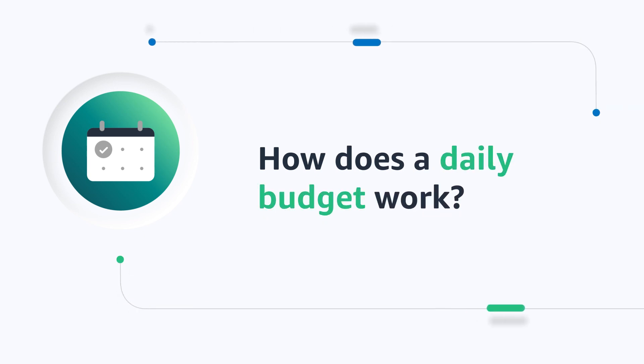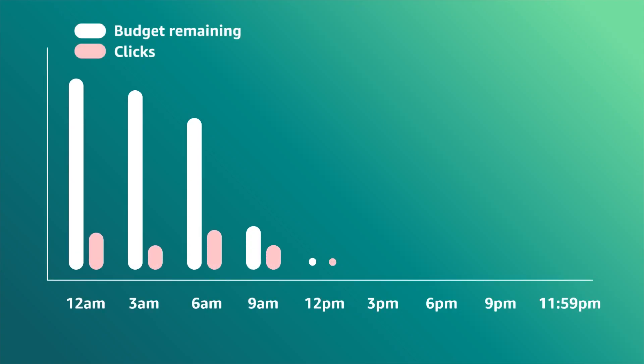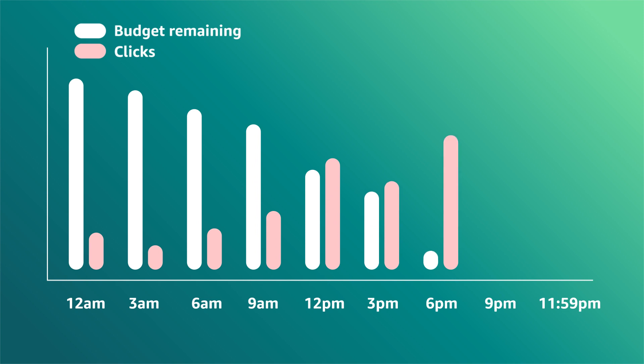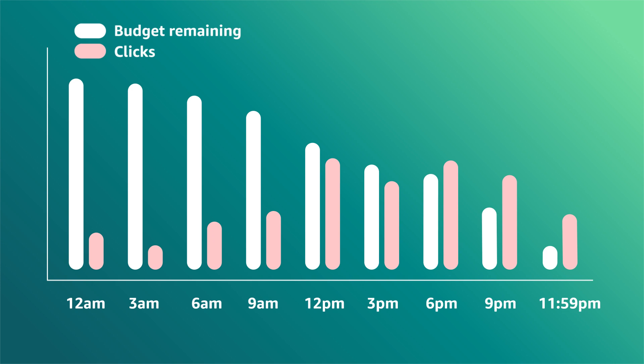How does a daily budget work? Daily budgets are not rationed throughout the day, so your budget will be spent as quickly as your ad receives clicks. When your daily budget has been spent, your ad will stop serving until the next day. This means that smaller budgets could be spent in a matter of hours or minutes during high traffic periods. Keep in mind that customers shop at different times, so it's important to set a daily budget that is high enough to last throughout the day.